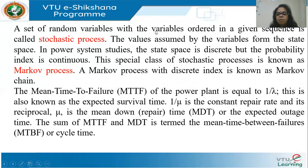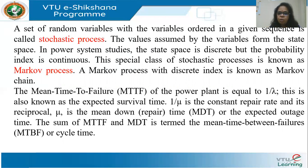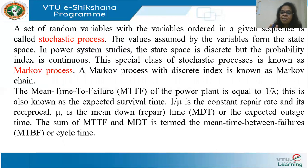A set of random variables ordered in a particular sequence is called a stochastic process. In power systems, the state space is discrete because every component is either functioning or not functioning — a circuit breaker either functions or it doesn't, a transformer is either energized or not, a line is either in operation or outaged, a generator is either supplying load or outaged. However, the probability is continuous — you can't say a transformer will either definitely fail or definitely not fail. So the probability of failure is continuous.